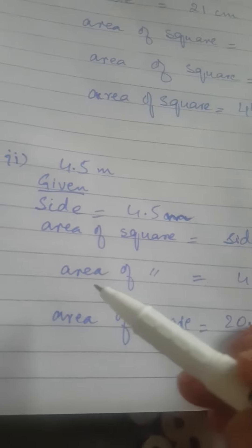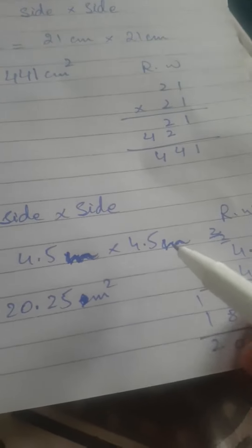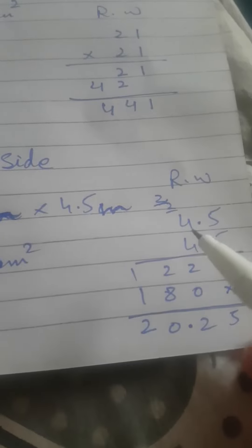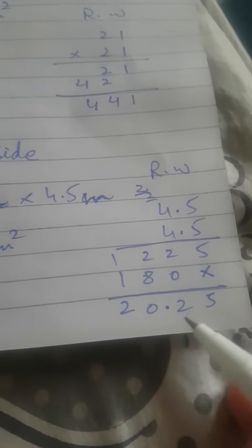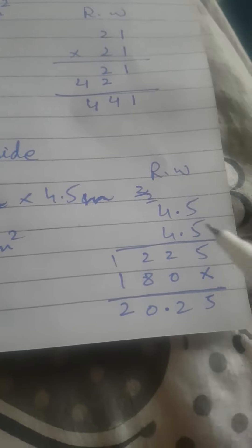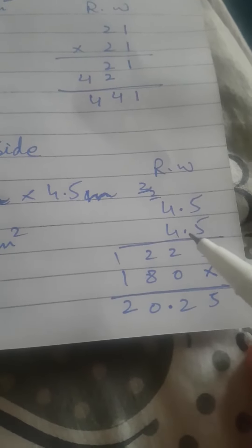So area of square is 4.5 meter multiply by 4.5 meter. You will do the rough work. So multiply 4.5 and 4.5, you will get 2025 as your answer. So you see here there are decimal points.